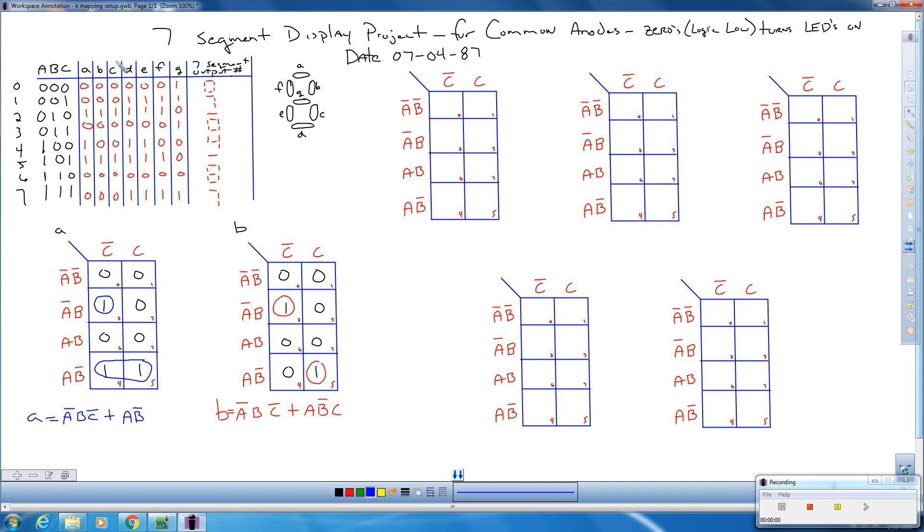Now, segment B, for this particular circuit, is the exact same as segment C. So I can say that this is the output for circuit B and for circuit C. That saves us a lot of time breadboarding. So both of these would go into the inputs on our 7-segment display. Alright, so now I don't have to even K-map C. C is done.